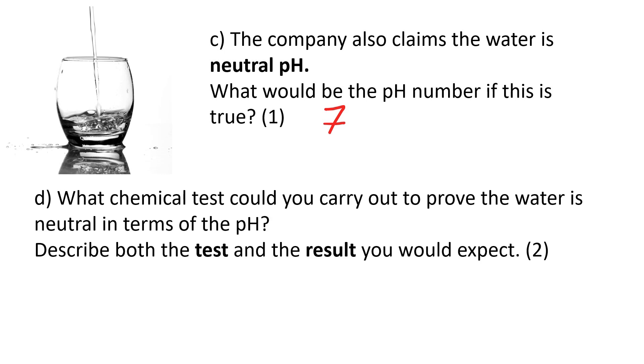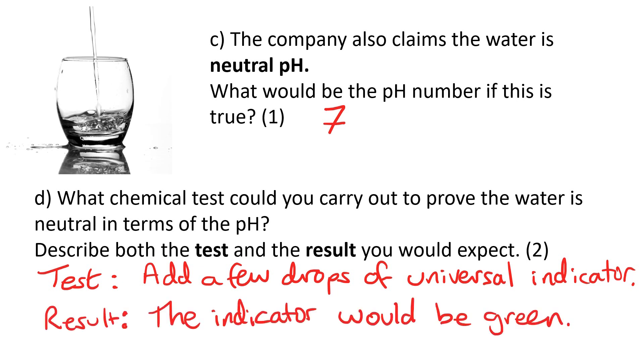Question D. What chemical test could you carry out to prove the water is neutral in terms of the pH? Describe both the test and the result you would expect. Well, the test would be to add a few drops of universal indicator, and the result would be the indicator would be green.